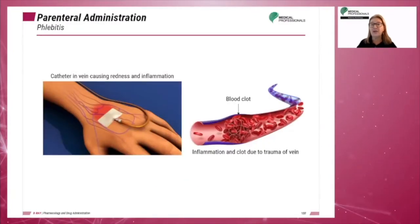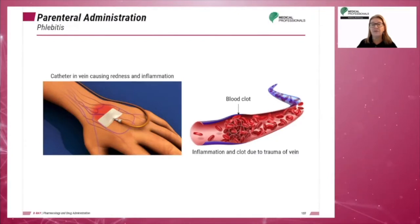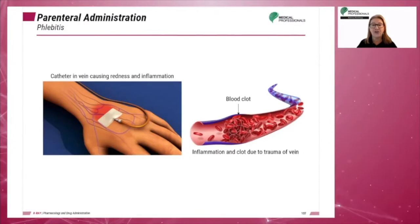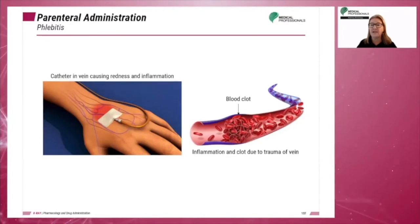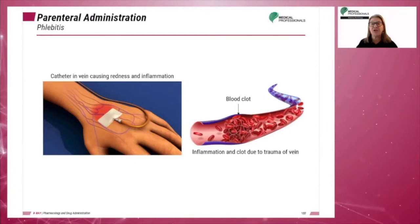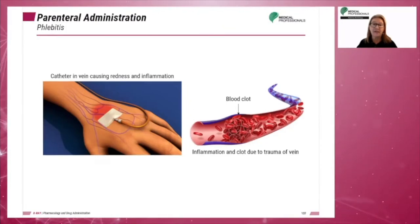Phlebitis is an inflammation of the vein resulting from vasodilation. It can result from leaving the catheter too long in the vein, constant movement of the needle at the insertion site, chemical irritation of the medication, or traumatic insertion of the catheter. The signs and symptoms are redness or warmth at the site, palpable cords along the vein, or a sluggish infusion rate. Treatment involves the use of warm packs or medications such as NSAIDs in the form of ibuprofen, or antibiotics for severe cases.